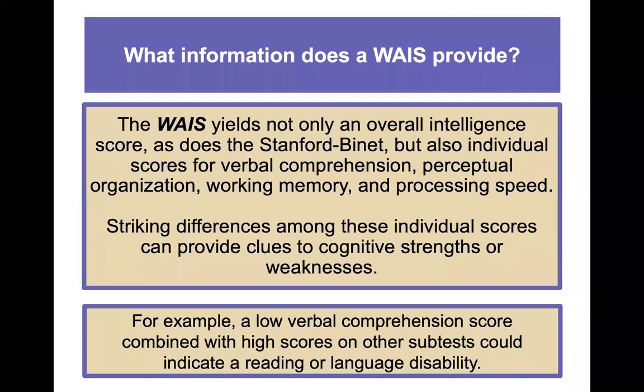The WAIS yields not only an overall IQ score like the Stanford-Binet, but also sub-scores for verbal comprehension, perceptual organization, working memory, and processing speed. Striking differences among those scores can give a psychologist clues about cognitive strengths or weaknesses. For example, a low verbal comprehension score combined with high scores elsewhere could potentially indicate a reading or language disability — which was a big part of the work done as a school psychologist evaluating students from preschool through college age.